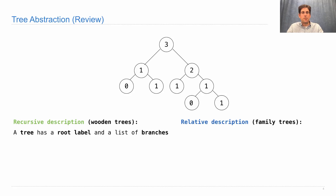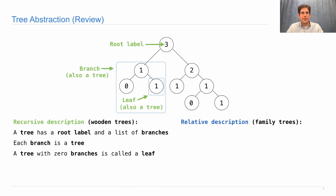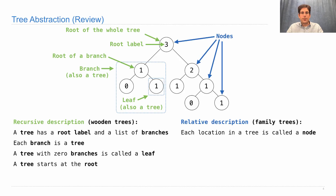Under the recursive description, a tree has a root label and a list of branches. The root label is three. Here's one branch, and the other branch is here. Each branch is also a tree. A tree with zero branches is called a leaf. A tree starts at the root — that's the root of the whole tree, and that's the root of a branch.